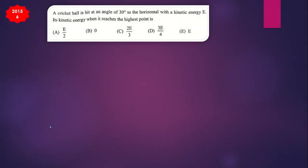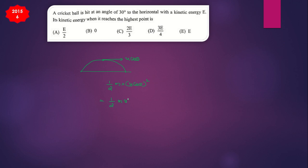Question from 2015, sixth question: a cricket ball is hit at 30 degrees to the horizontal with kinetic energy E. What is its kinetic energy at the highest point? At the highest point only horizontal velocity remains, so KE = E × cos²θ = E × cos²30° = E × (√3/2)² = E × (3/4) = 3E/4. The answer is D.